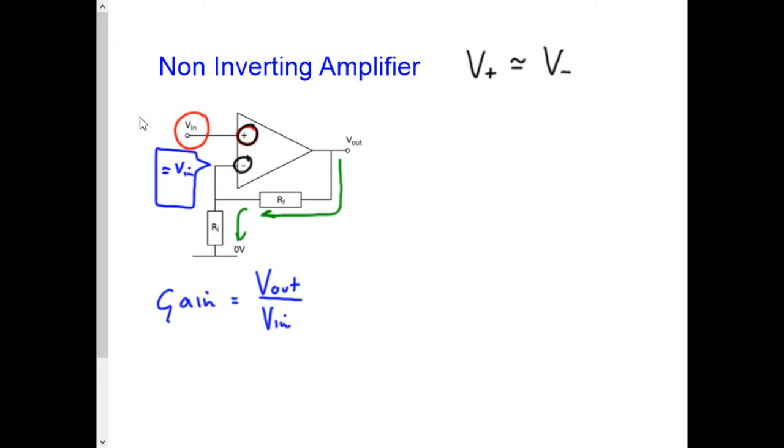So now let's apply ourselves to some calculations and we're going to try and calculate this current I, which is the same in both resistors because no current flows into the inverting input. And therefore,